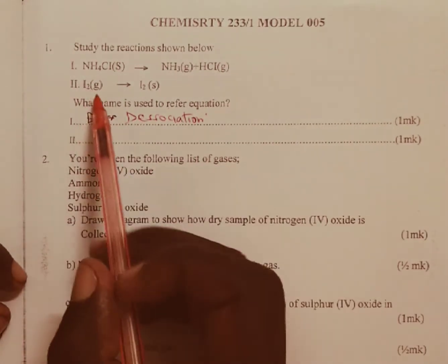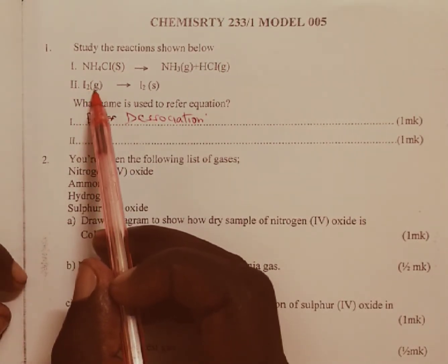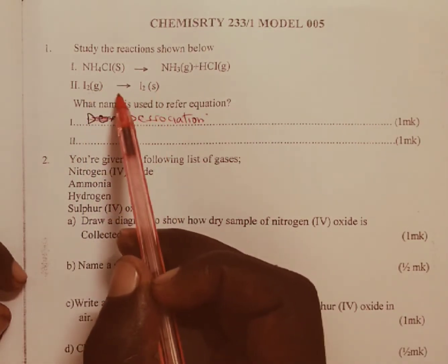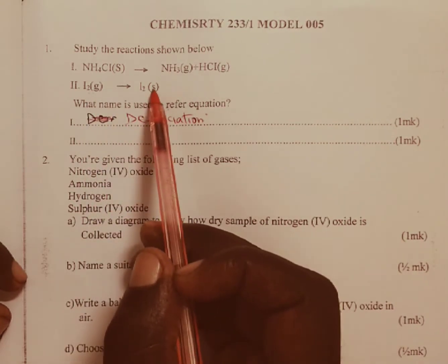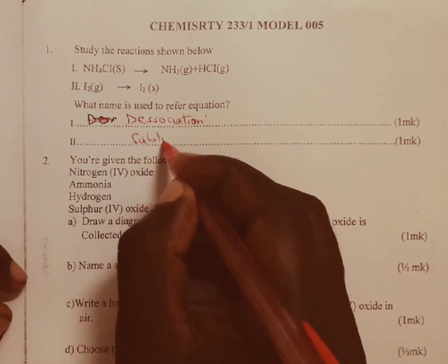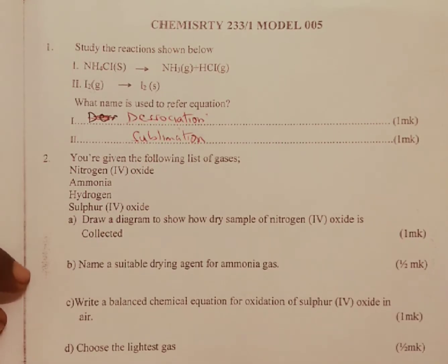In equation number two we can see iodine changing directly from gas to solid, and the change of a substance from a gas directly to a solid or solid directly to a gas is known as sublimation.